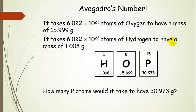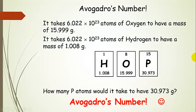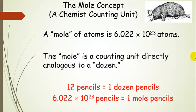Now take a look at phosphorus. How many phosphorus atoms would it take to have a mass of 30.973 grams, as shown on the periodic table? That's right — Avogadro's number. It's going to take 6.022 times 10 to the 23rd of them.